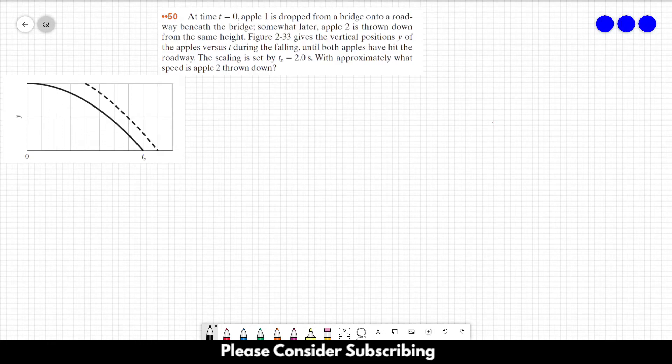Number 50. At time t equals 0, apple 1 is dropped from a bridge onto the roadway beneath. Somewhat later, apple 2 is thrown down from the same height. This figure gives the vertical positions y of the apples versus t during the falling until both apples hit the roadway. The scaling is set by ts equals 2 seconds. With approximately what speed is apple 2 thrown down?